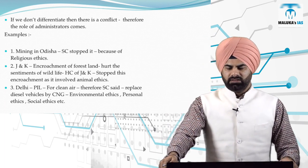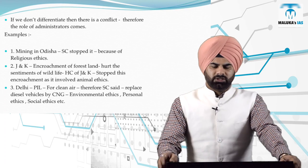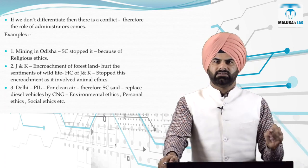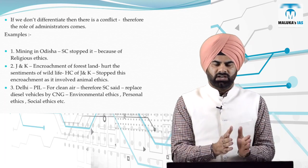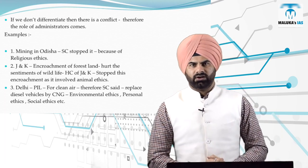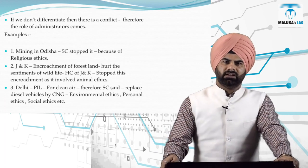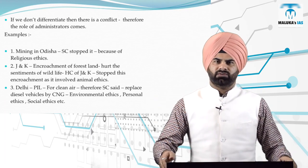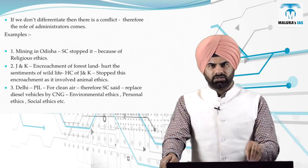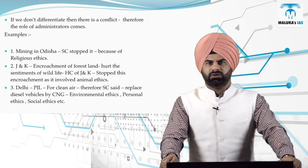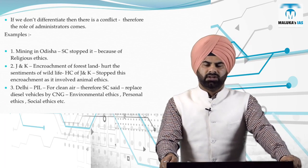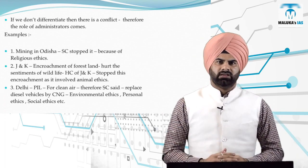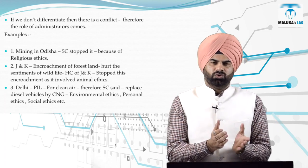For example, the issue in Singarur: the Supreme Court interfered and said we have to stop the mining there, because the Supreme Court indirectly said that religious issues of the community are involved. When religious ethics of the community are involved, you cannot do overdevelopment there. Second example: in Jammu and Kashmir, encroachment was taking place on forest land, which was hurting the wildlife staying there, so the High Court of Jammu and Kashmir concluded that the encroachment had to be stopped.